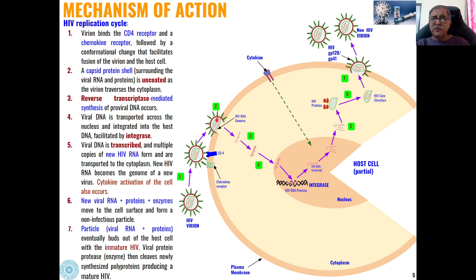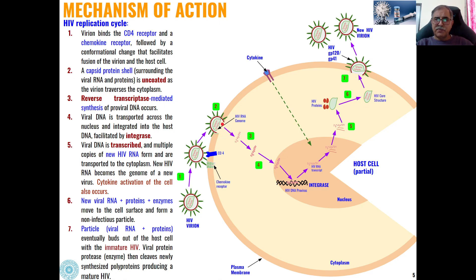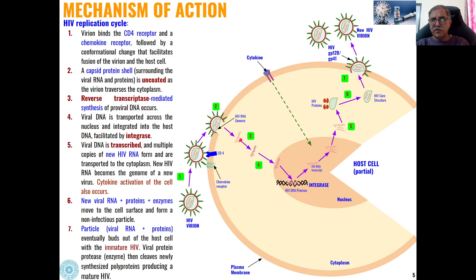In the second step, the virus has a capsid protein shell which surrounds the viral RNA and proteins. This is uncoated as the RNA and proteins transfer into the cytoplasm of the host cell. After fusion, this uncoating takes place and the HIV RNA genome is translocated into the cytoplasm of the cell. Then, this RNA undergoes the third step — reverse transcriptase-mediated synthesis of proviral DNA — so this RNA is converted through the reverse transcriptase enzyme into DNA.